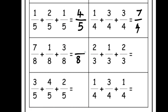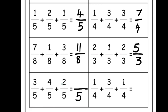In the next fraction, the denominator is 8. Adding the numerators: 7 plus 1 plus 3 equals 11, so the answer is 11 by 8. Next, the denominator is 3 and adding 2 plus 1 plus 2 gives 5 in the numerator, so the answer is 5 by 3. Next, the denominator is 5 and adding 3, 4, and 2 gives 9, so the answer is 9 by 5. In the last question, the denominator is 4 and adding the numerators gives 5, so the answer is 5 by 4.